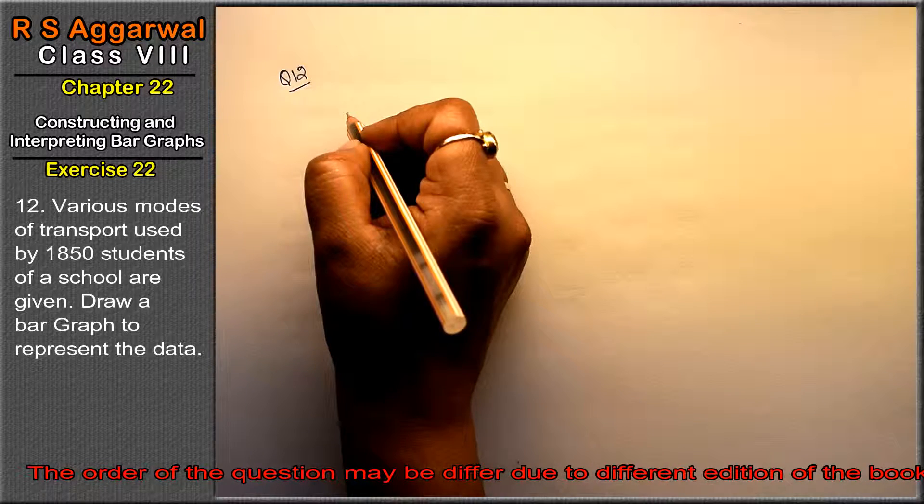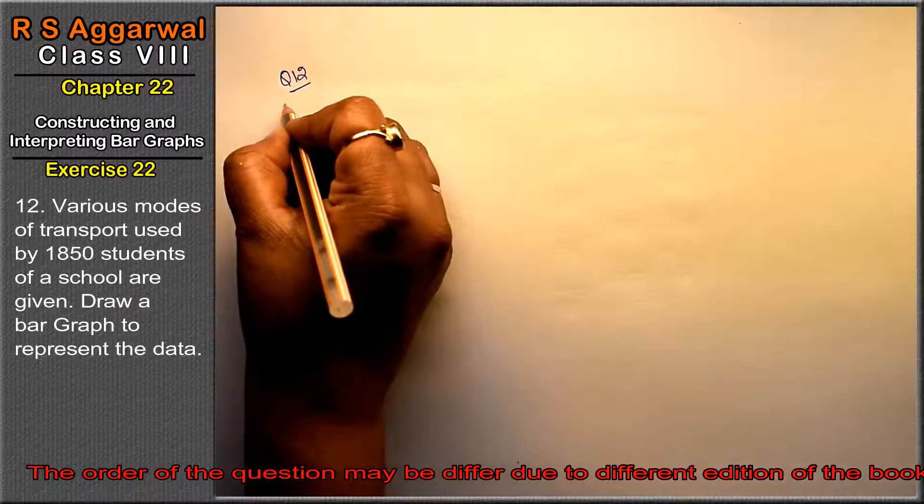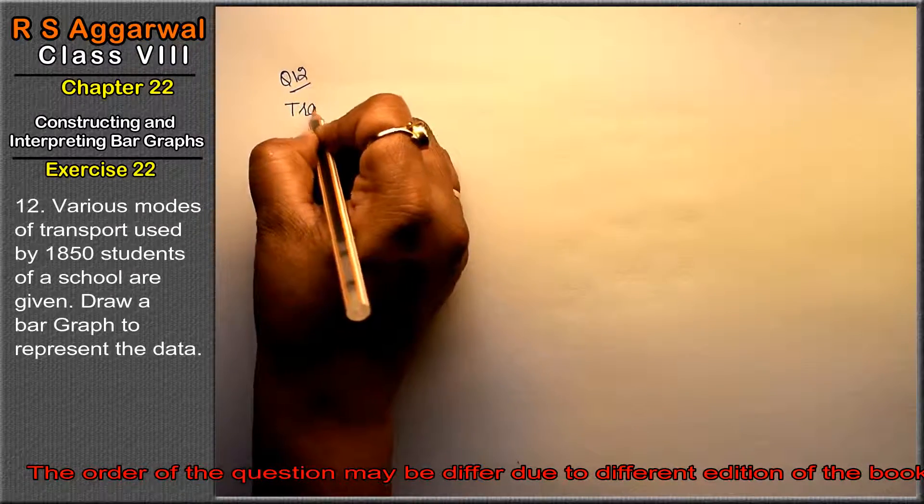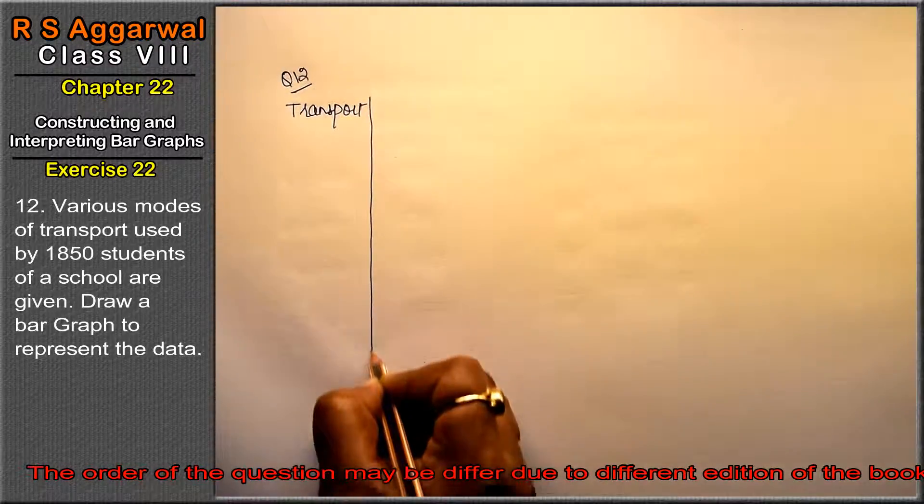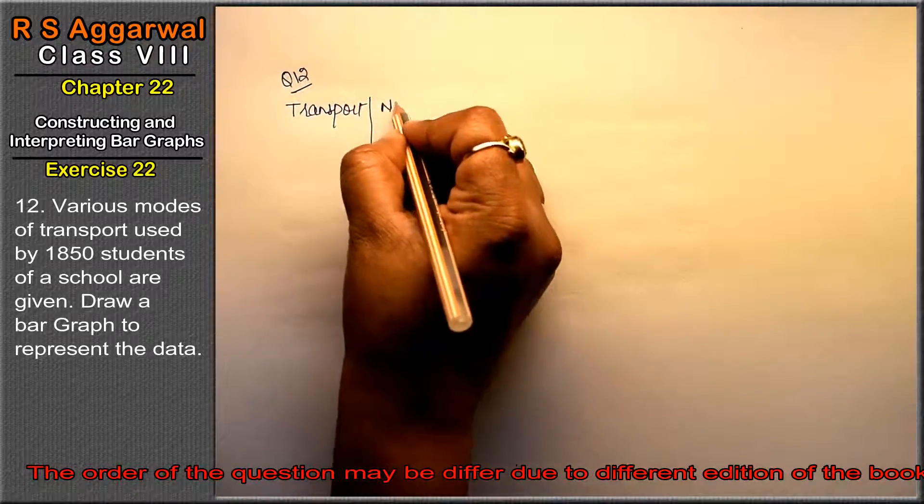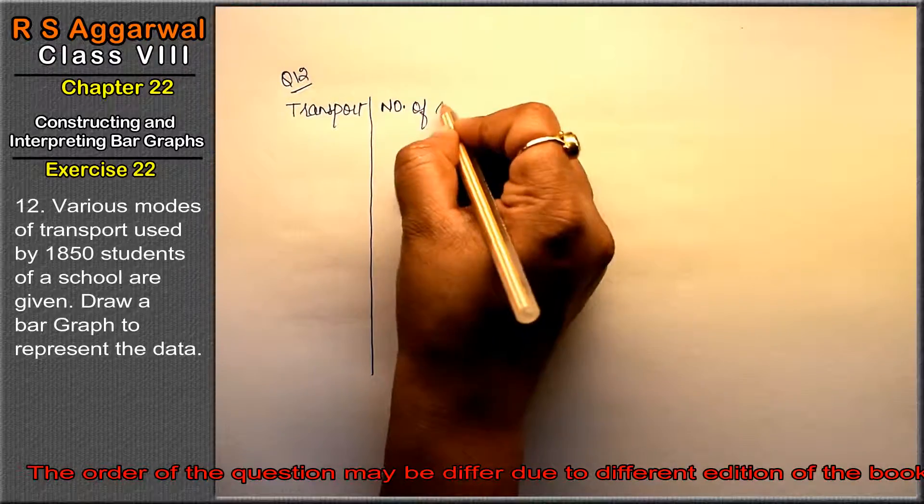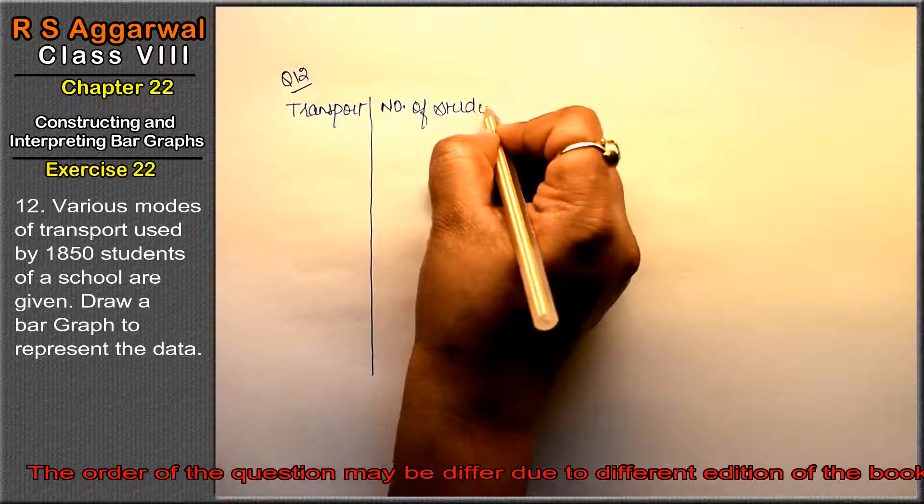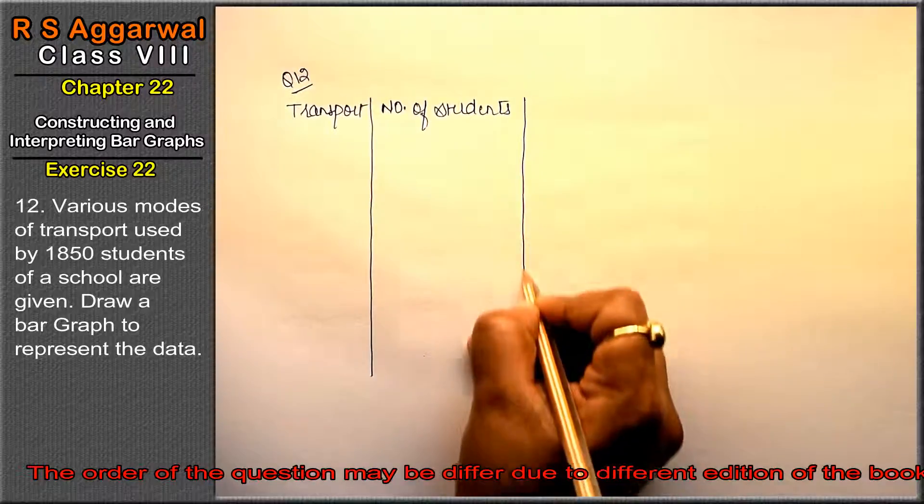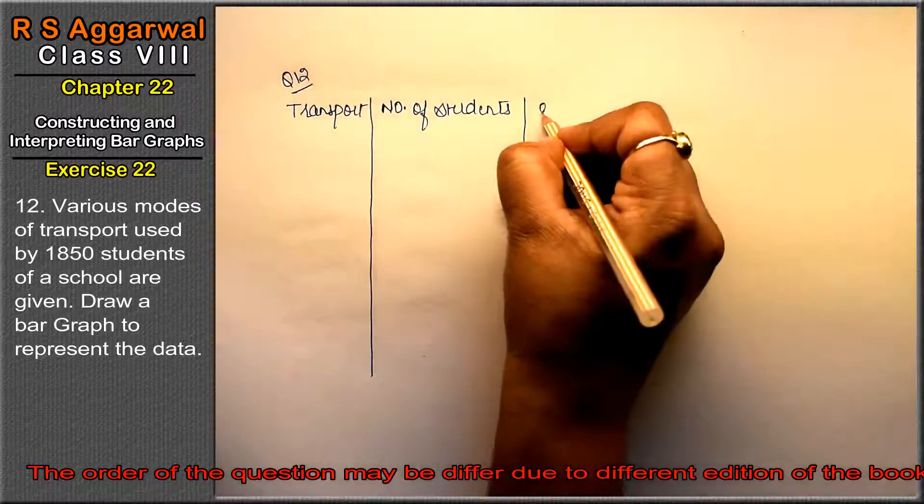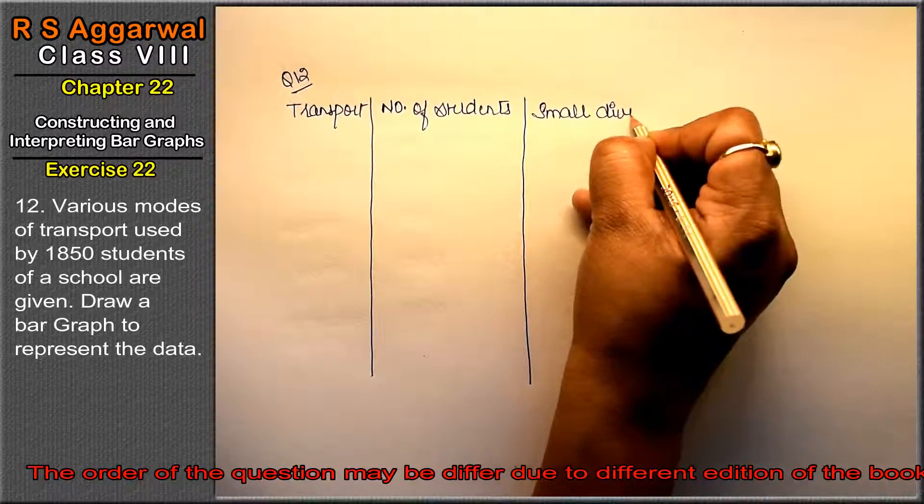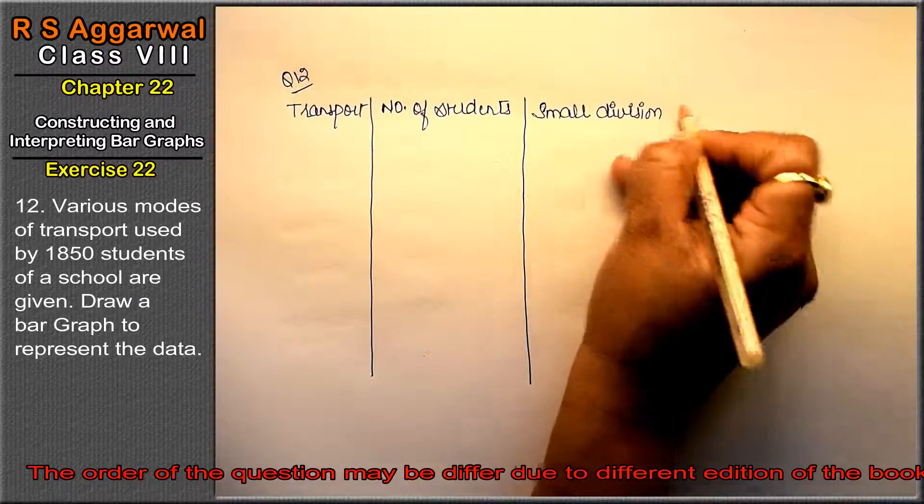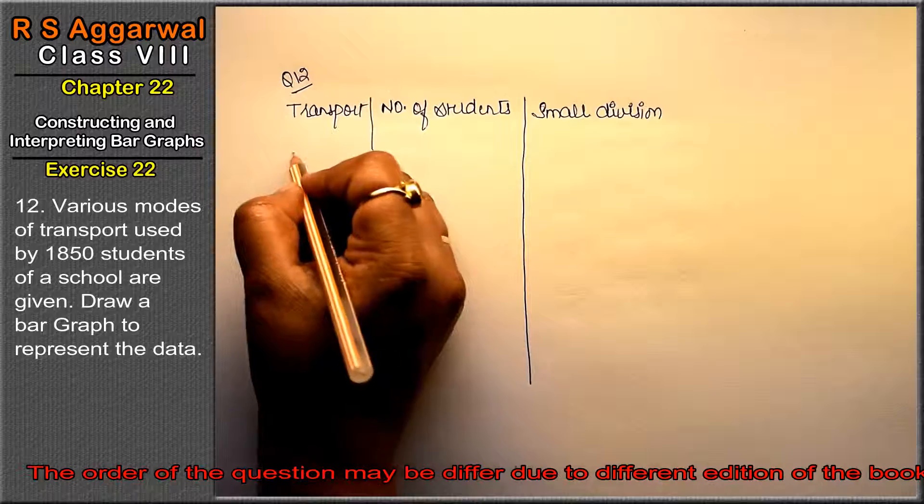Friends, ye different type of transport dee rakhe hai jo ki 1850 total students use karte hai. So first column ho gaya humara transport. Next, haan mein number of students dee rakhe hai ki jo ye use karte hai. Aur haan mein last mein nikal na hai small division. To first is school bus.